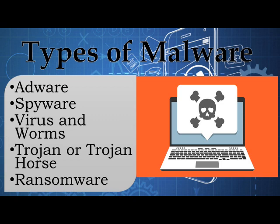Viruses and worms are malwares that attach to other programs and, when executed unintentionally by the user, replicate themselves by modifying other computer programs and infecting them with their own bits of code. A Trojan, or Trojan Horse, is one of the most dangerous malware types. It presents itself as something useful in order to trick you, and once it's in your system, the attackers gain unauthorized access to the affected computer. Trojans can be used to steal financial information or install threats like viruses or ransomware. Ransomware is a form of malware that locks you out of your device and encrypts your files, then forces you to pay a ransom to get them back.